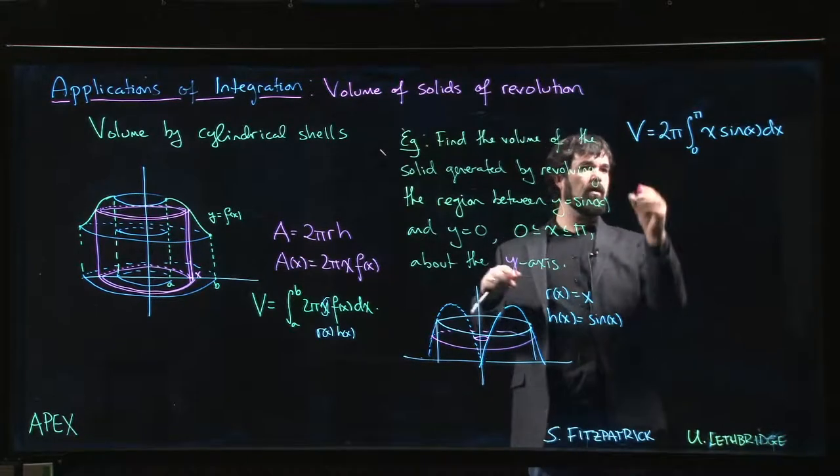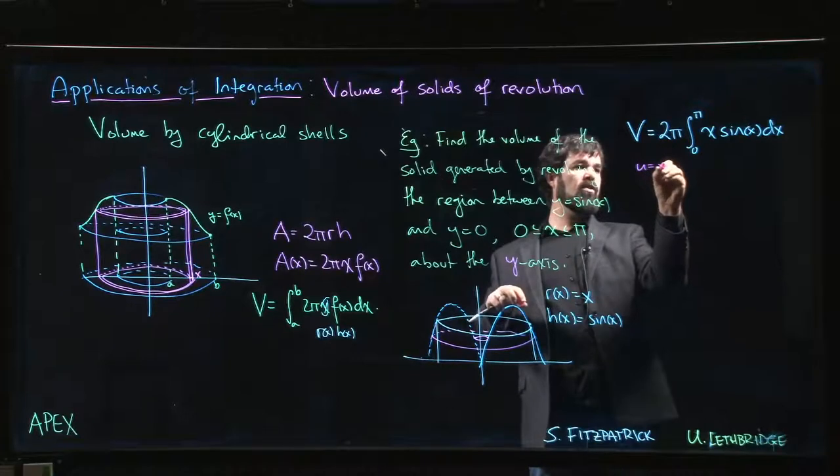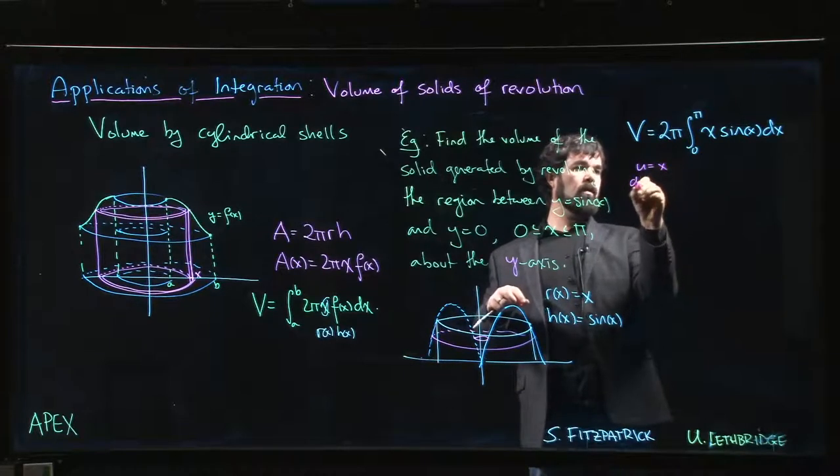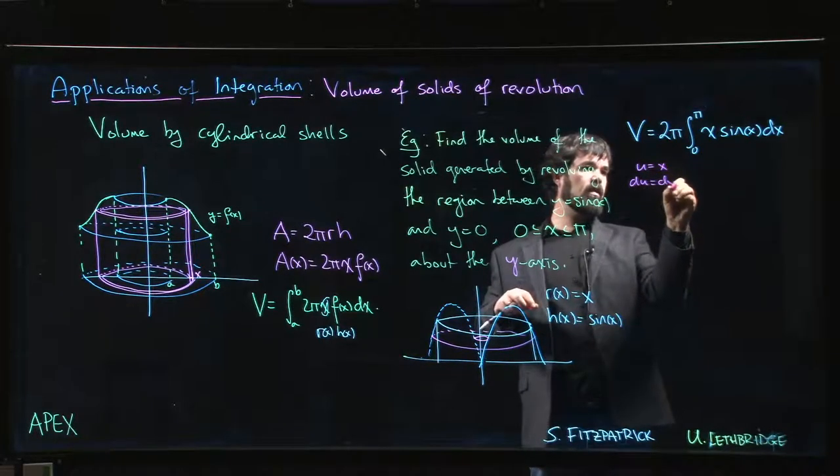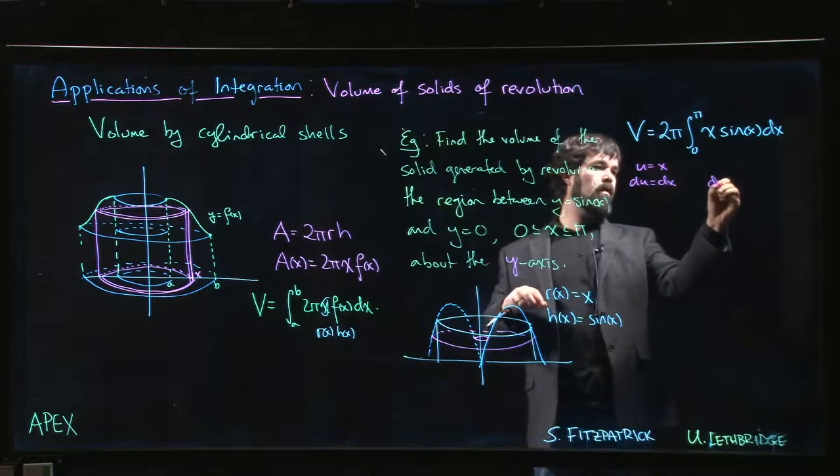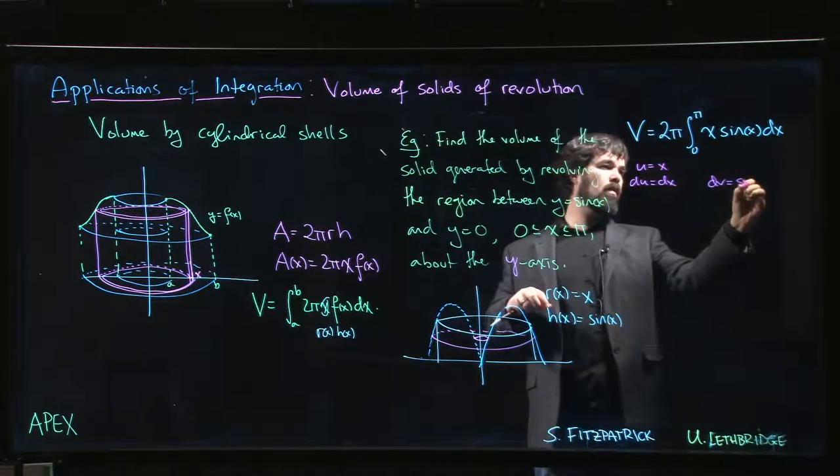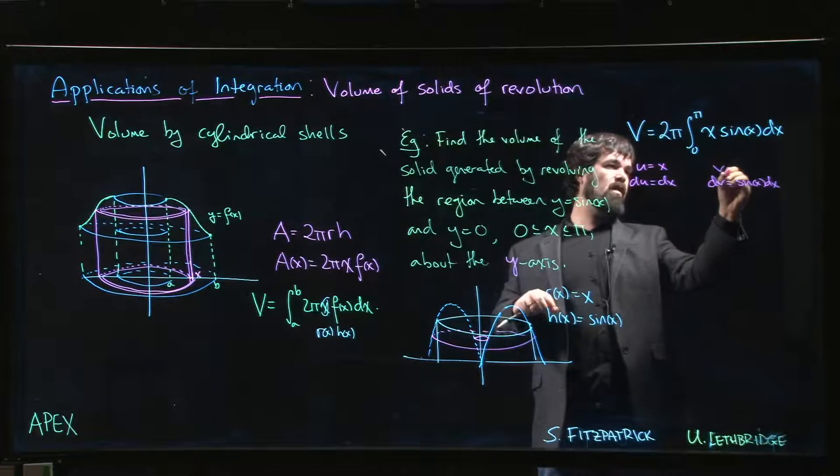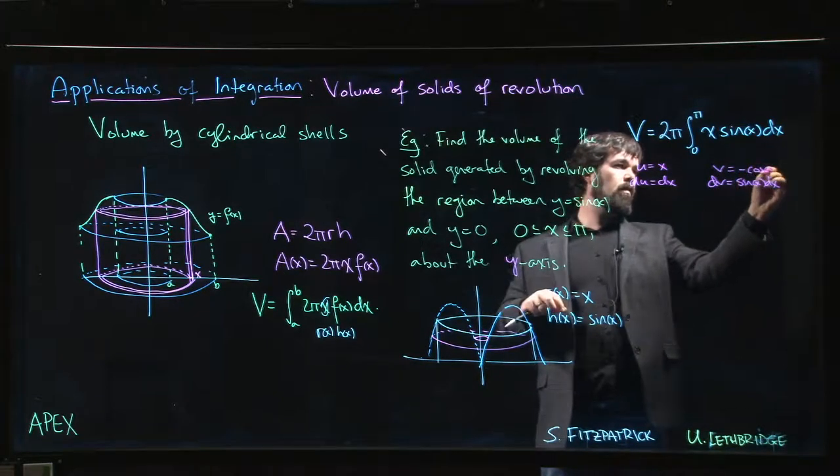If we're doing this by parts, remember, u is typically the power function if there is one. Du is dx. Dv is sine x dx, that makes v equal to negative cos x.